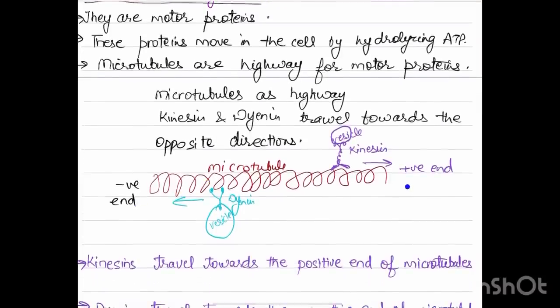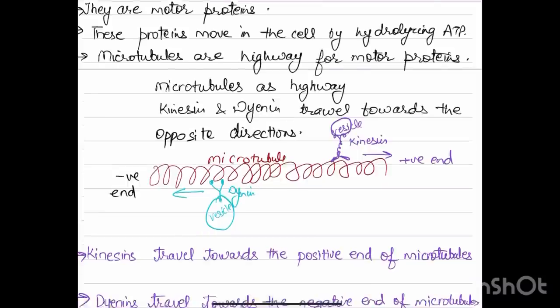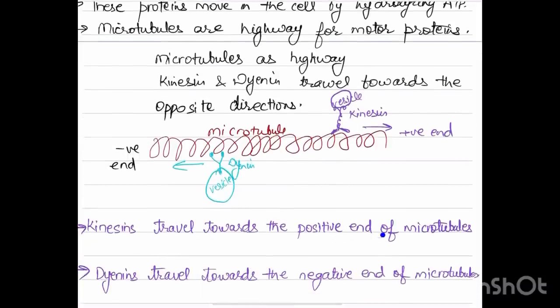This is the negative end and this is the positive end. On the microtubule, both dynein and kinesins carrying vesicles are traveling towards the opposite ends.